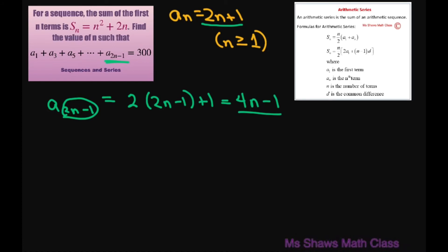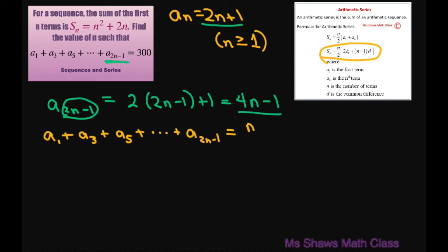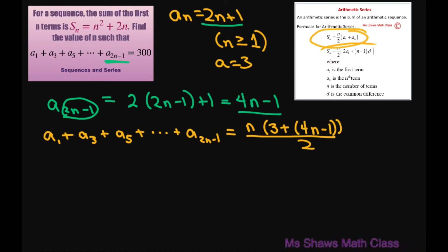Now when we add all the terms up together, we use the arithmetic series sum formula. This equals n times (first term plus last term) divided by 2. The first term is 3 and the last term is 4n minus 1, so this is n times (3 plus 4n minus 1) divided by 2, which equals n times (4n plus 2) divided by 2, giving us n times (2n plus 1).